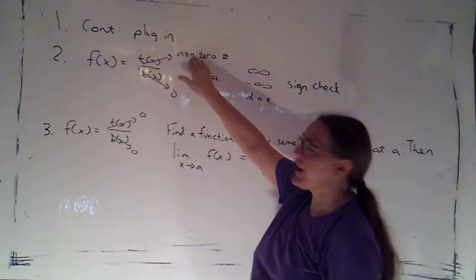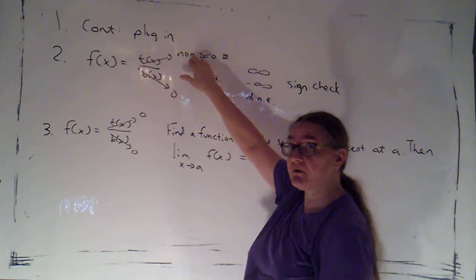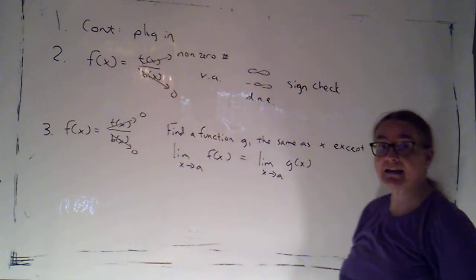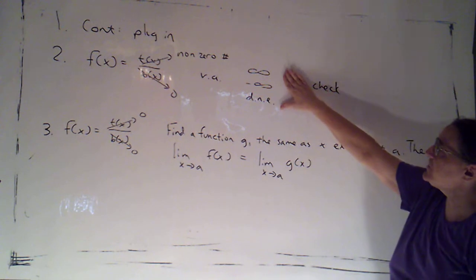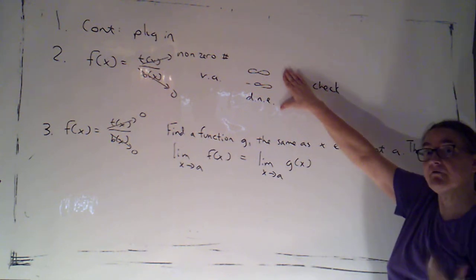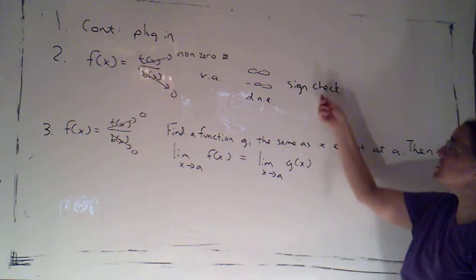If the bottom goes to 0 and the top goes to a non-zero number, I know I have a vertical asymptote. To determine which of these three options—infinity, negative infinity, or does not exist—is the correct limit, we just do a sign check.